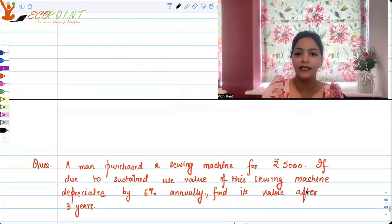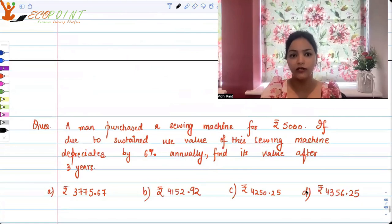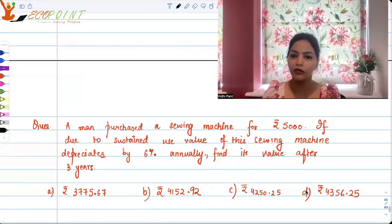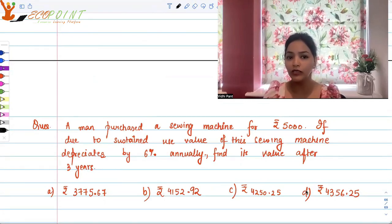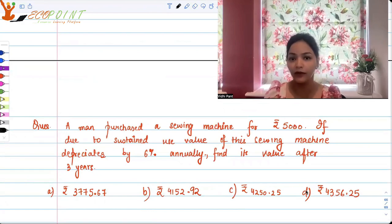Let's take up another question for our revision. A man purchased a sewing machine for 5000. If due to sustained use value of the sewing machine depreciates at 6% annually, find its value after three years.